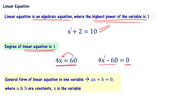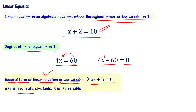The general form of a linear equation in one variable is ax plus b equal to 0, where a and b are constants — they are real numbers — and x is the variable. For example, you can also write it as ay plus b equal to 0, where y is the variable and a and b are constants or real numbers.